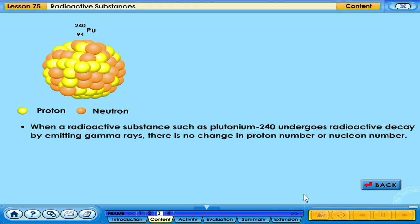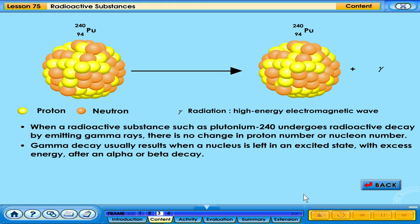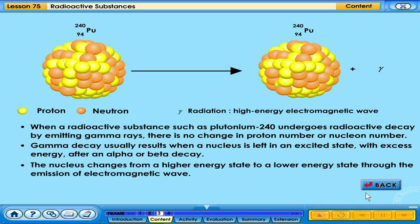When a radioactive substance such as plutonium-240 undergoes radioactive decay by emitting gamma rays, there is no change in proton number or nucleon number. Gamma decay usually results when a nucleus is left with excess energy after an alpha or beta decay. The nucleus changes from a higher energy state to a lower energy state through the emission of electromagnetic wave.